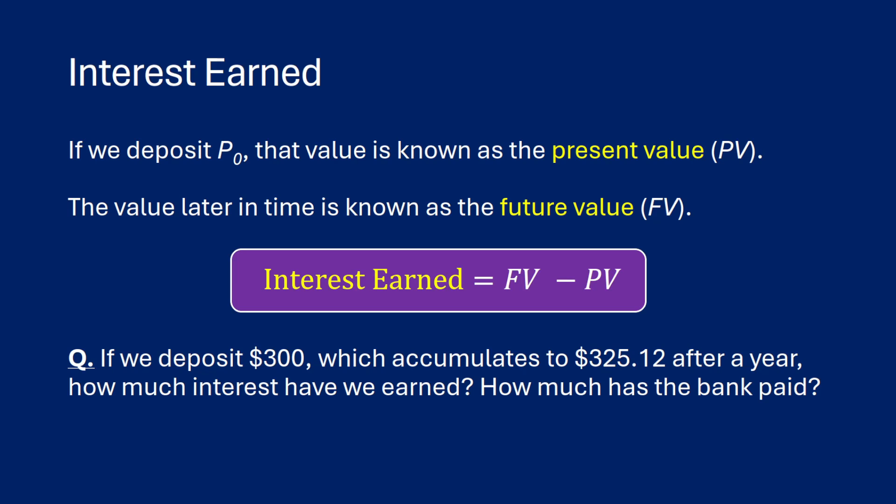So we will define our deposits as P0, our principal at time zero. This will be our present value. And whatever time we pick later is the future value. So another way of thinking about interest earned is just FV minus PV or future value minus present value.